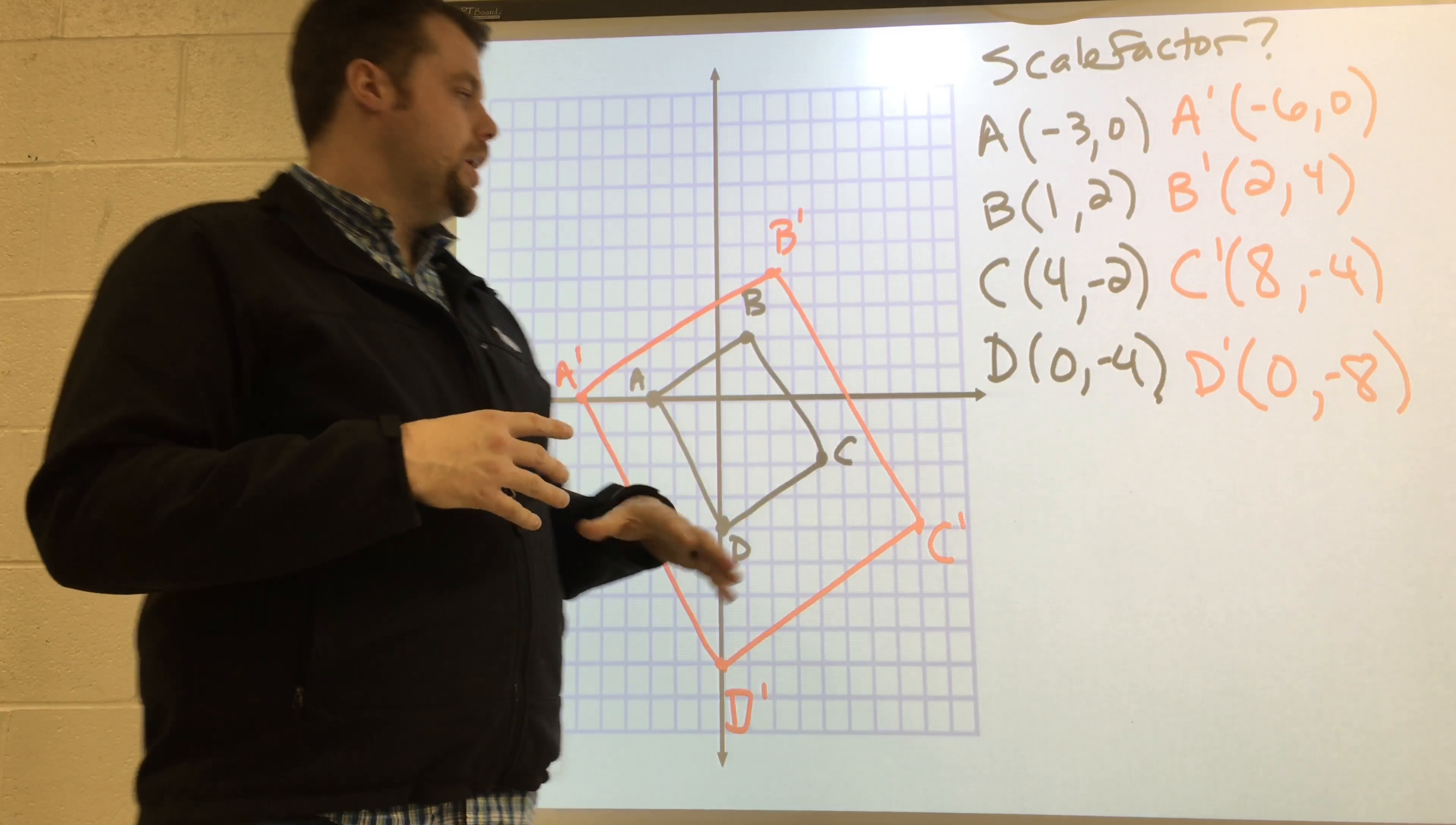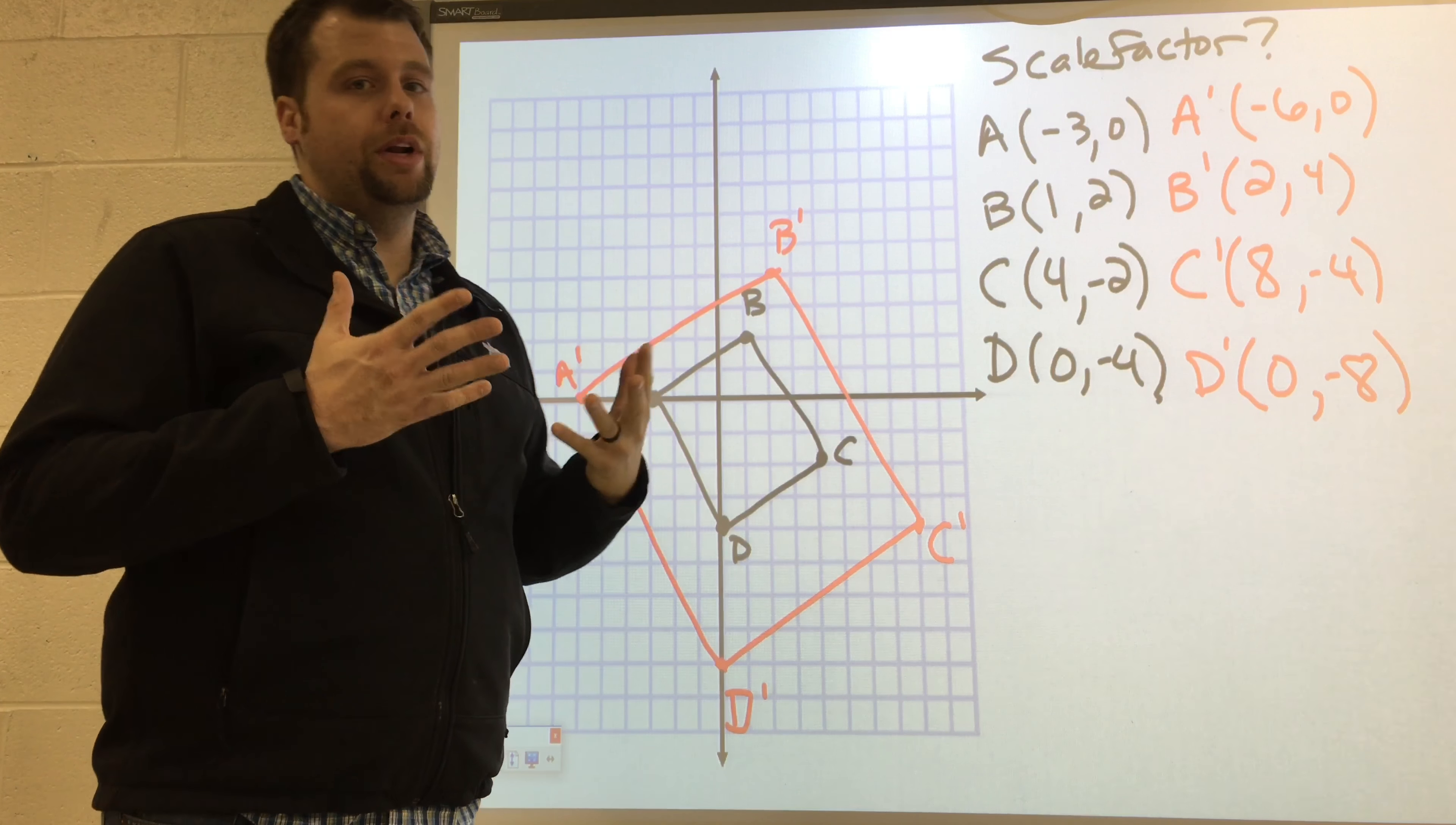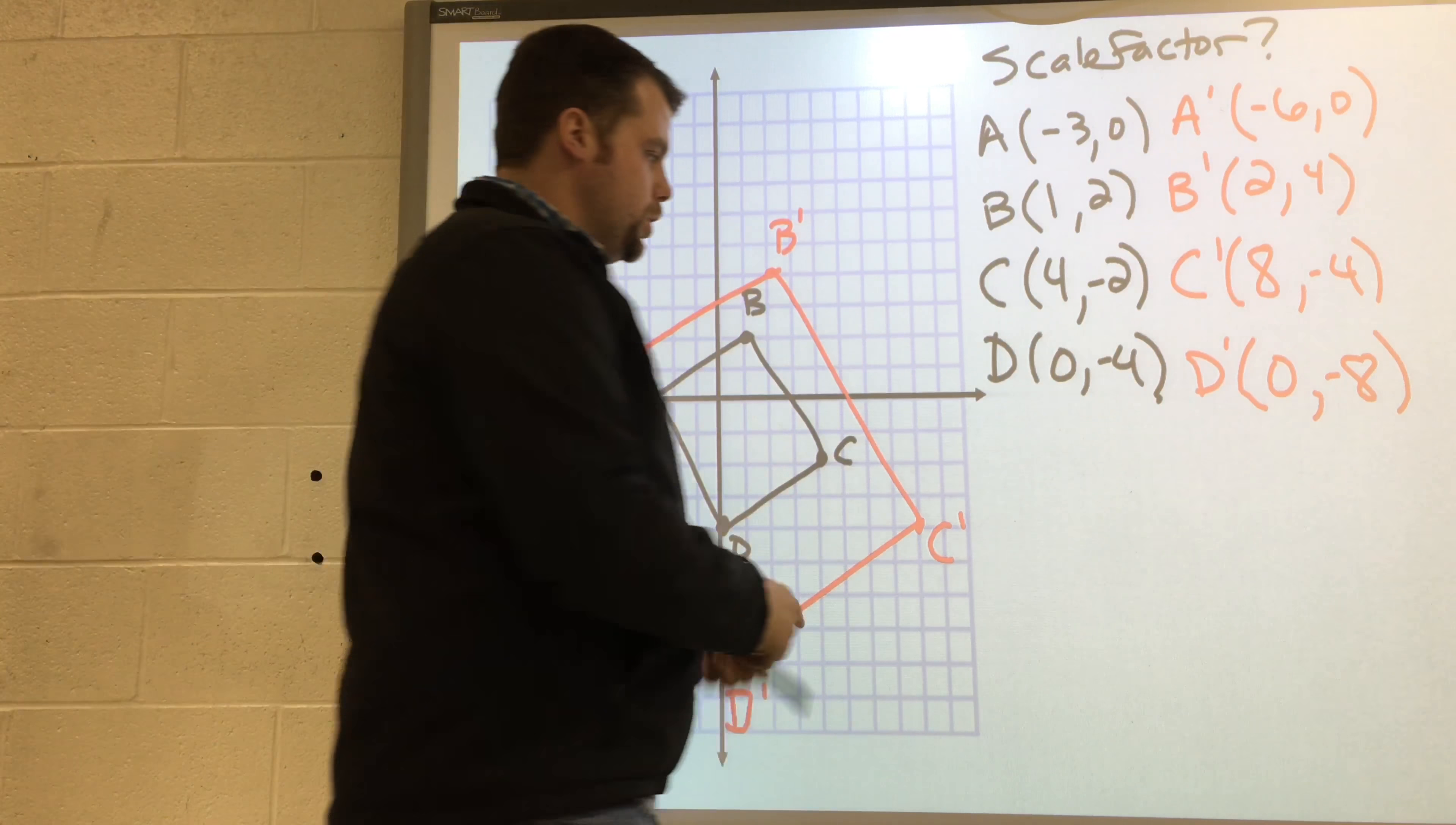So for this next one, I have quadrilateral ABCD graphed already, and A-prime, B-prime, C-prime, and D-prime graphed already. What I want to do is figure out what the scale factor is. So, if you look, ABCD was smaller, the new figure, the image, is larger. This is clearly an enlargement.